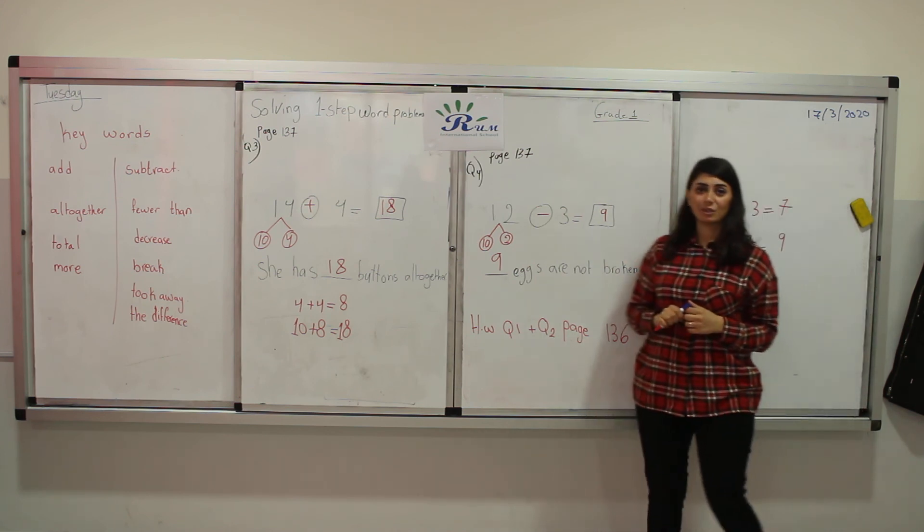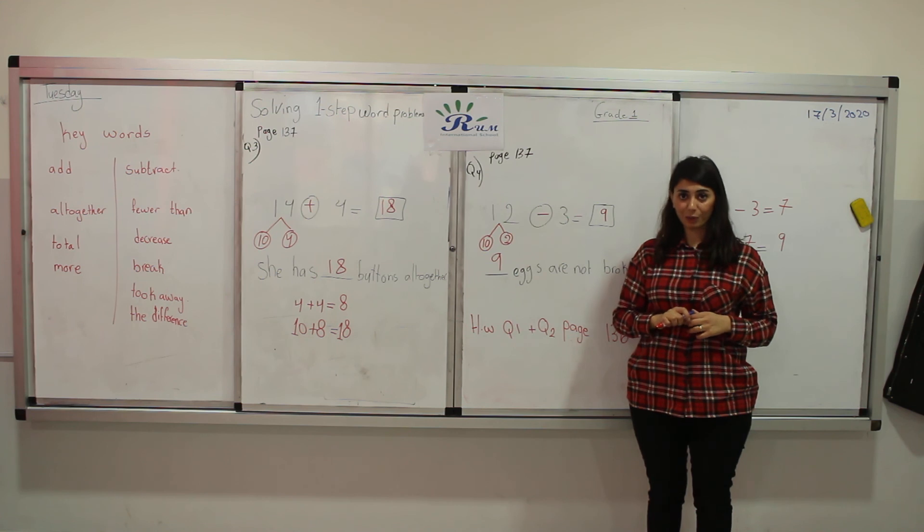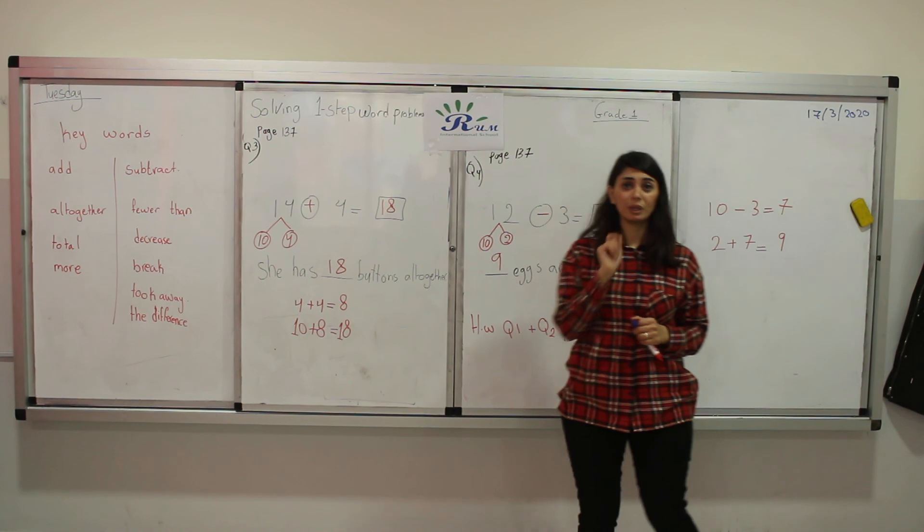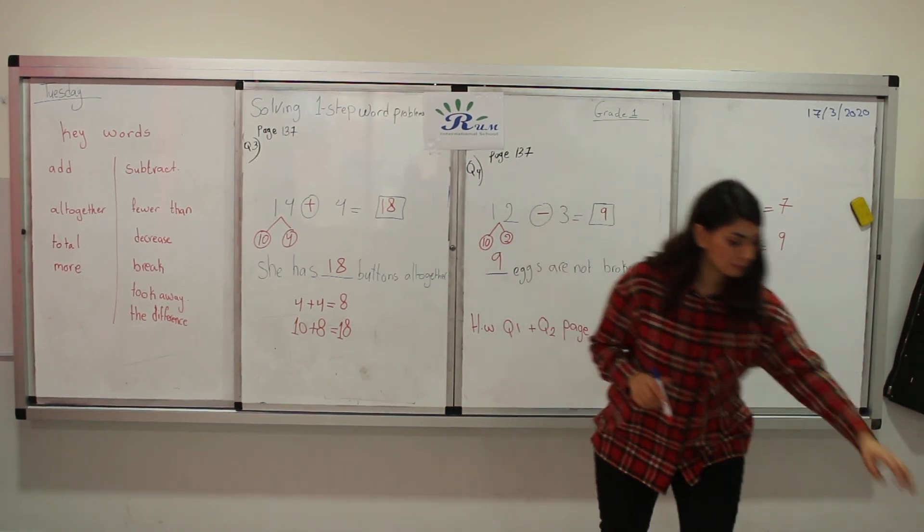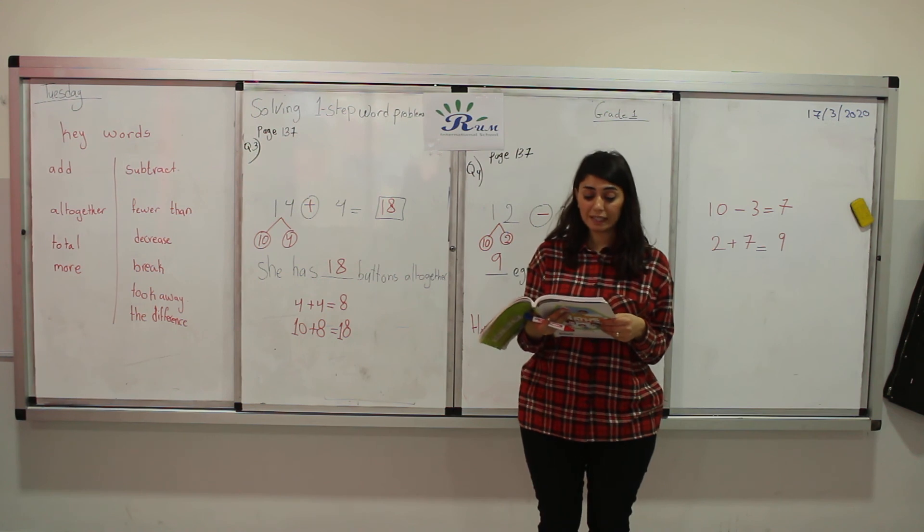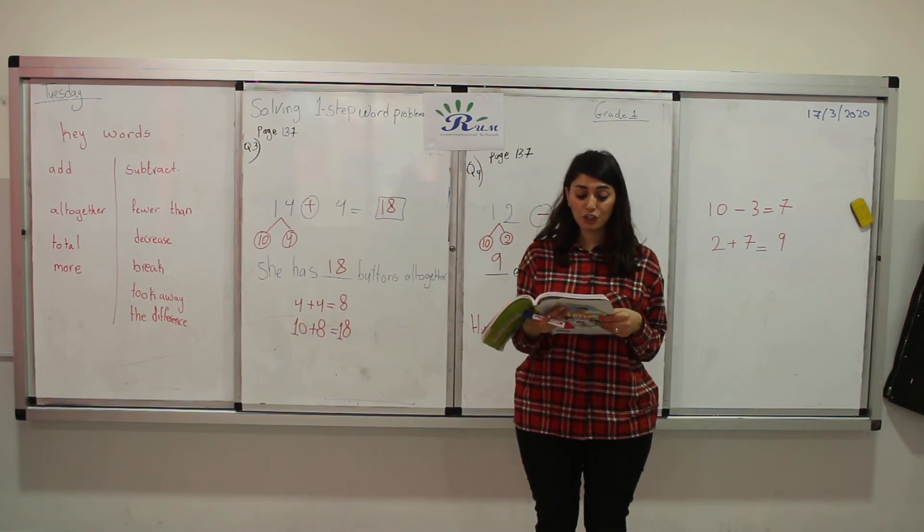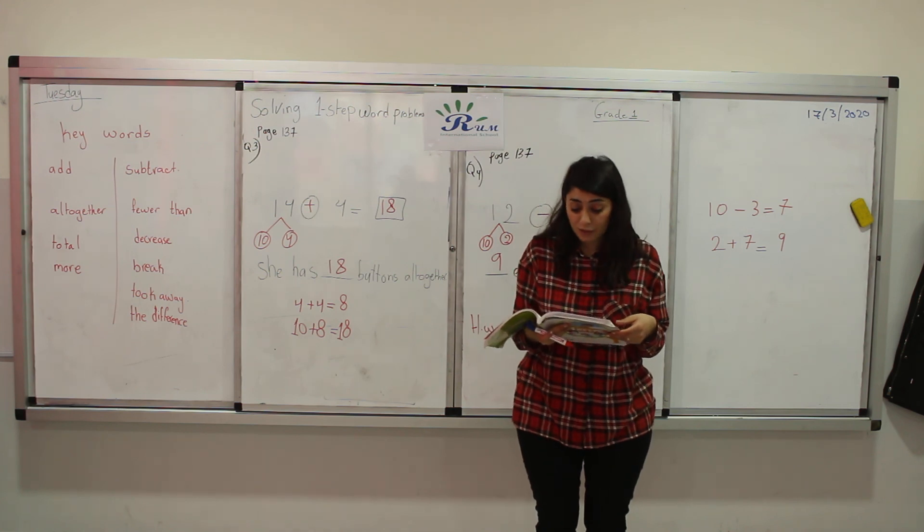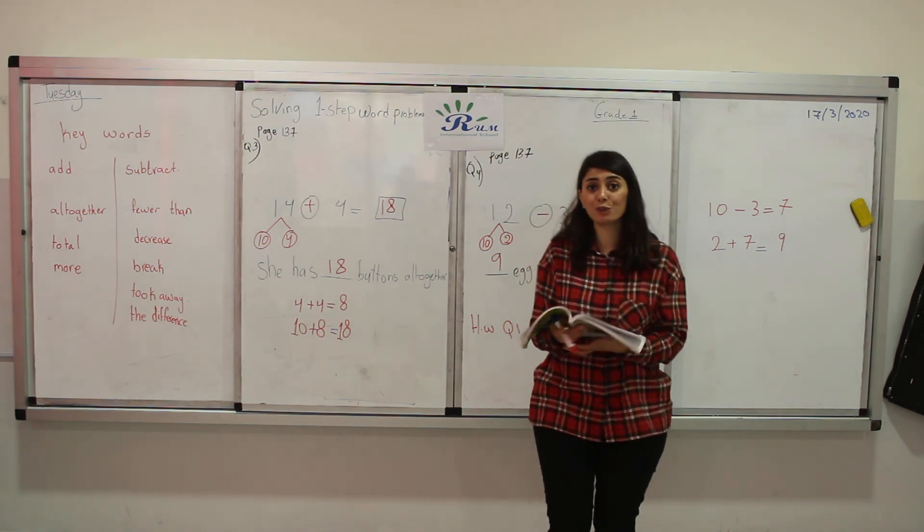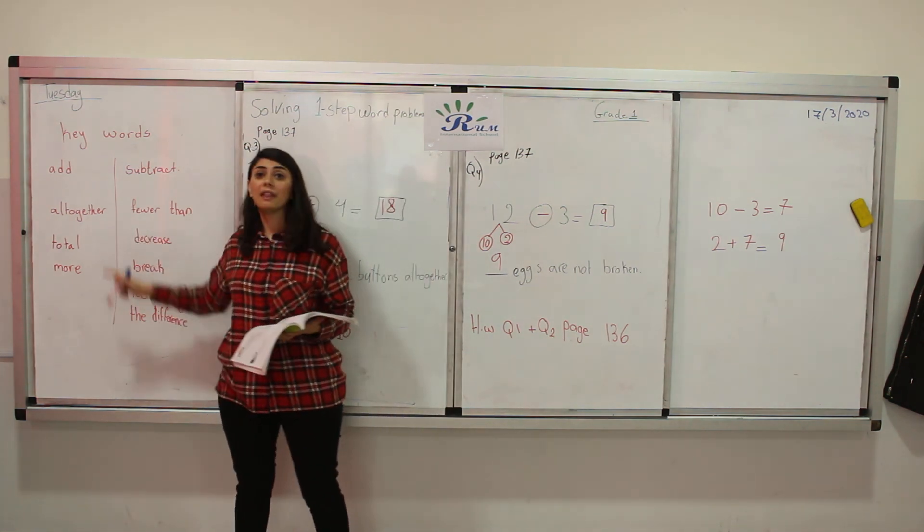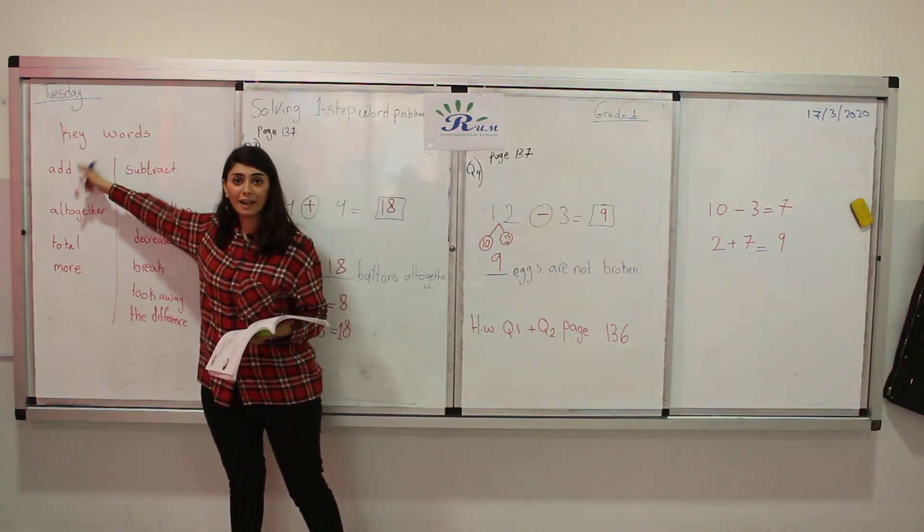Please don't forget to solve your homework, which is question number 1 and 2, page 136. And I will give you a hint for them. Here, in question 1, Lynn has 9 sweets. She buys 7 more sweets. How many sweets does she have all together? Here we have 2 keywords: more and all together. And they both indicate for addition.